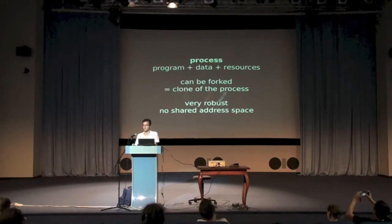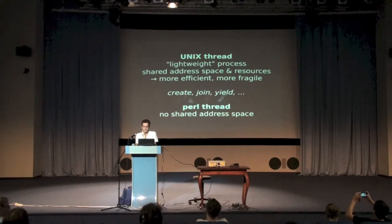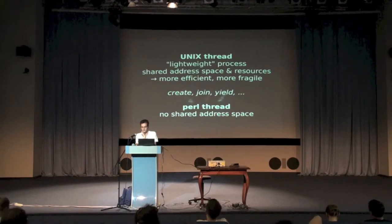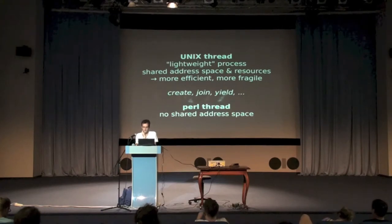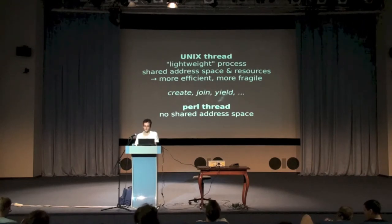Forking is a very robust principle, but you don't have a shared address space by default. There are solutions to get there — the Unix thread was defined as a lightweight process where you have a shared thread of execution within the same address space and with the same resources, which is much more efficient but also sometimes difficult to get right and synchronized. Unfortunately, in Perl, threads have no shared address space, so this is not easily possible.